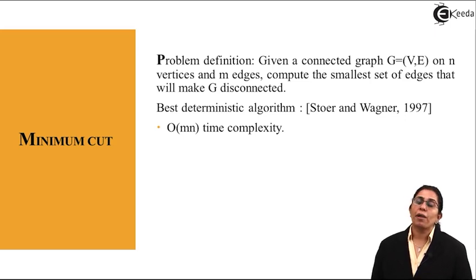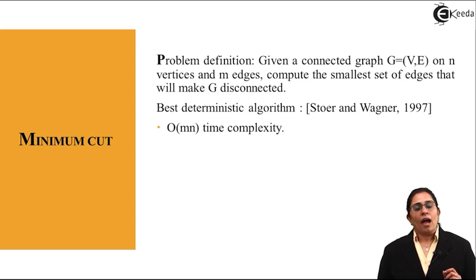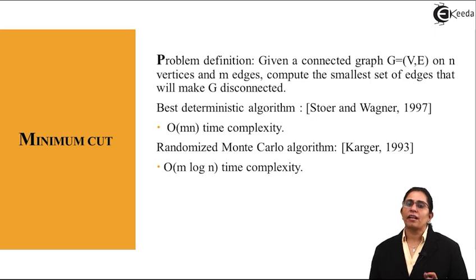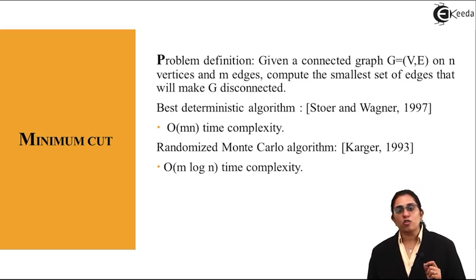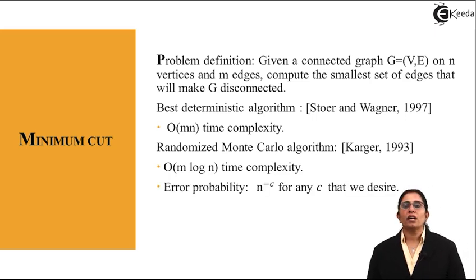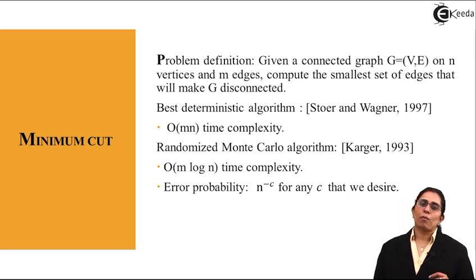The randomized Monte Carlo algorithm by Karger 1993 has a time complexity of big O(M log N). It shows that randomized Monte Carlo algorithm performs better than the deterministic algorithm. But the error probability in the Monte Carlo algorithm is N raised to the power of minus C, and minus C is the cut that we require in a minimum cut algorithm.